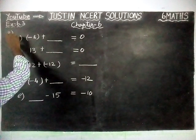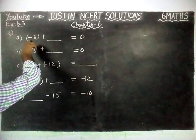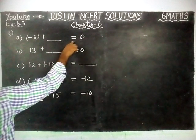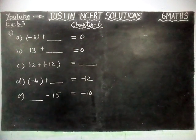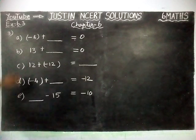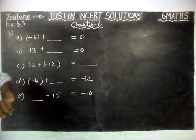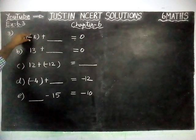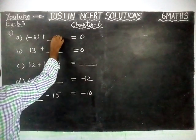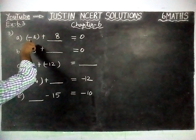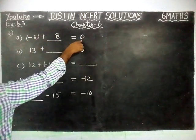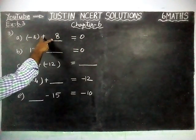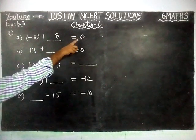We are going to find answers for part A: minus 8 plus dash equals 0. By using additive inverse, we can find the answer for this. If we are using additive inverse, we will get 0. If it is minus 8, we have to take the opposite number. Inverse of minus 8 is plus 8. So minus 8 plus 8 equals 0. Signs are different. Difference: 8 minus 8 equals 0.